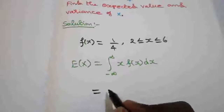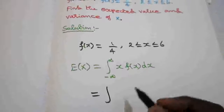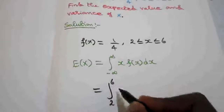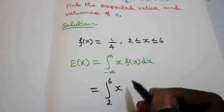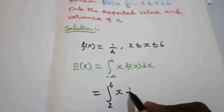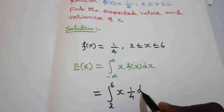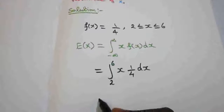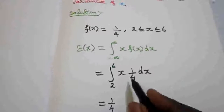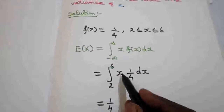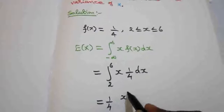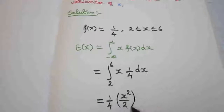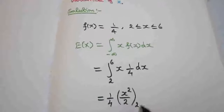Here the range of x is 2 to 6, so E(x) = integral from 2 to 6 of x · f(x) dx. Since f(x) = 1/4, this becomes the integral from 2 to 6 of x · (1/4) dx. Taking 1/4 outside, integration of x is x²/2, with the limit 2 to 6.